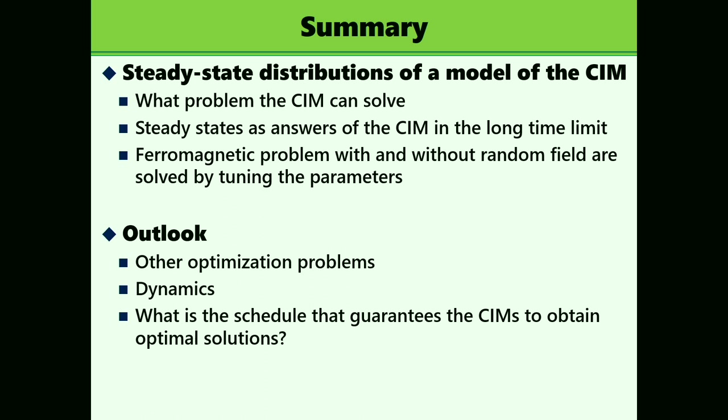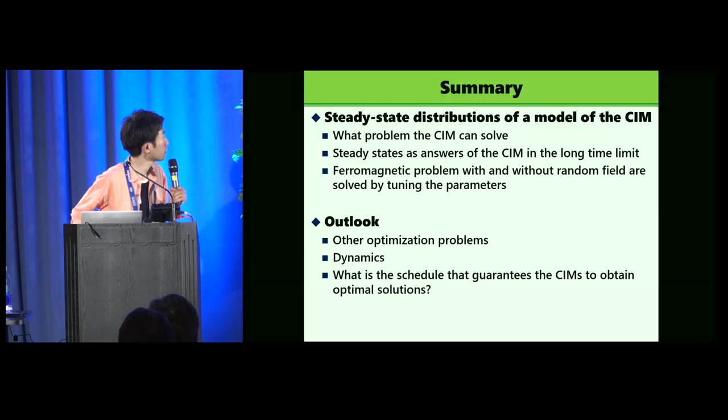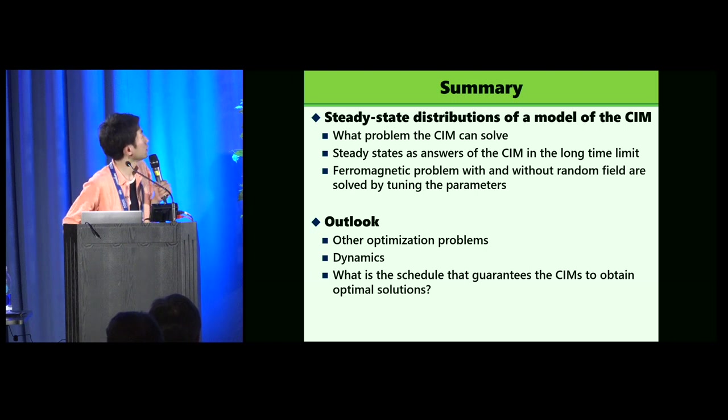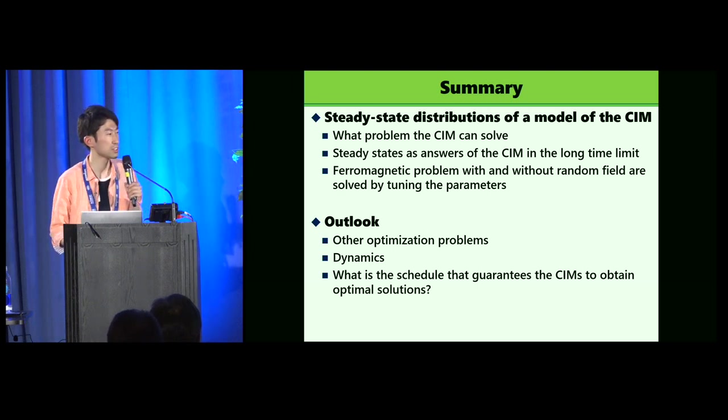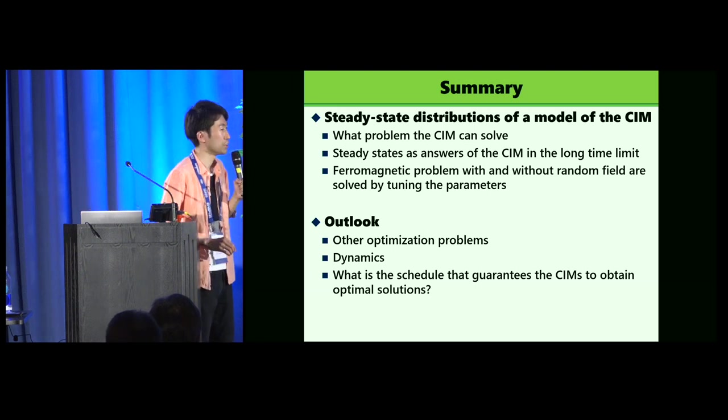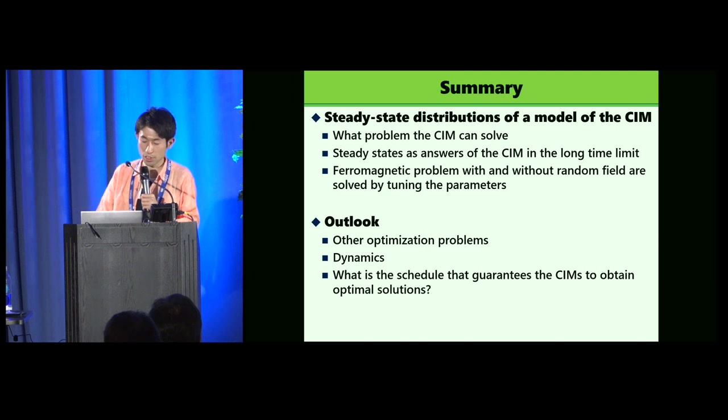And Outlook is, we've tried only simple problems, so we have to next try to solve other difficult optimization problems. We just analyze steady-state states, so we next investigate dynamics itself. Most important, ultimate question to be solved is, what is the schedule that guarantees the CIMs to obtain optimal solutions? This is a very important next task to be done. After that, we may be able to discuss the speed or computational time needed to obtain optimal solutions. So it's an important future work. That's all. Thank you.